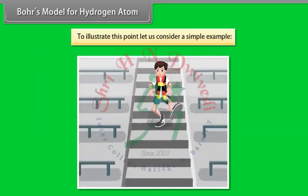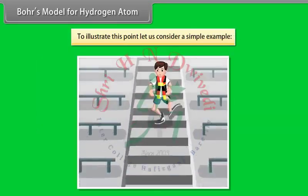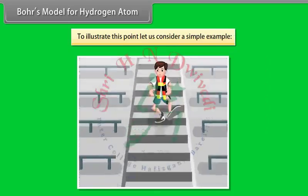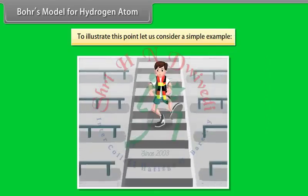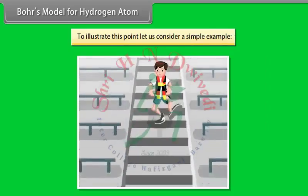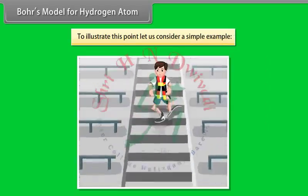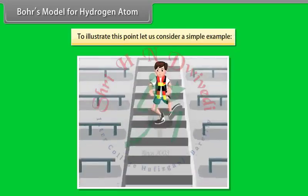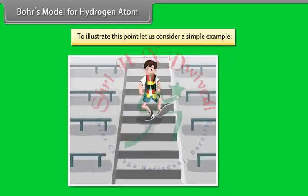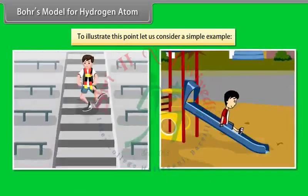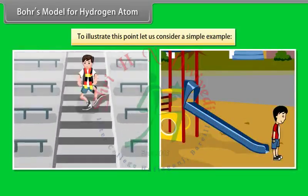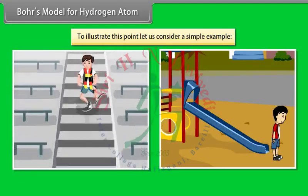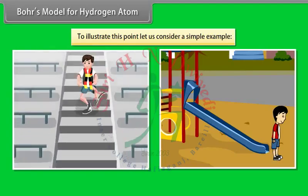To illustrate this point, consider a simple example. Suppose a person moves down a staircase — their energy changes discontinuously and they can have only certain definite values corresponding to the energy of the various steps. Energy in this case is quantized. On the other hand, if the person moves down a ramp, their energy changes continuously and they can have any value of energy corresponding to any point on the ramp. Energy in this case is not quantized.